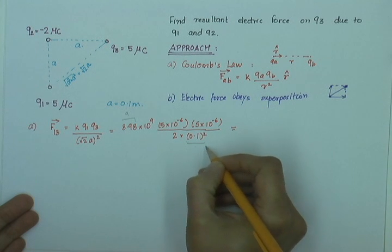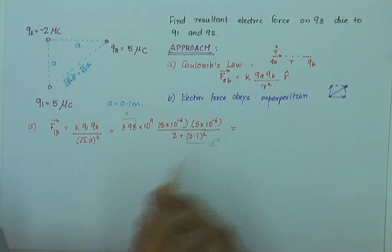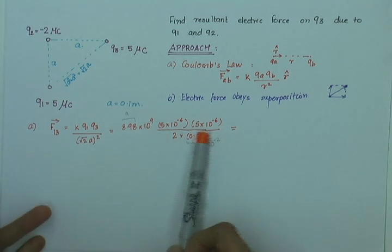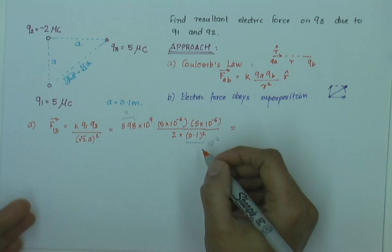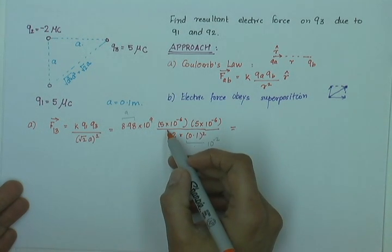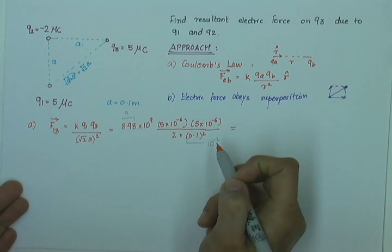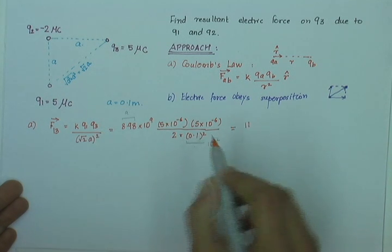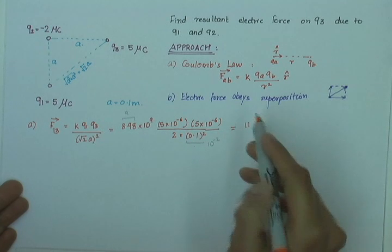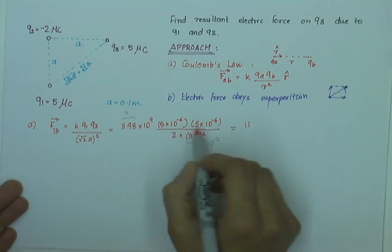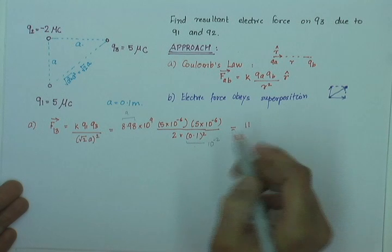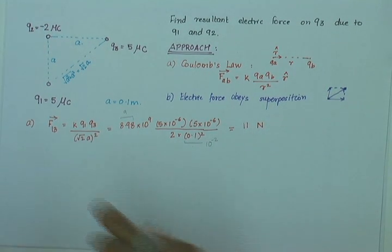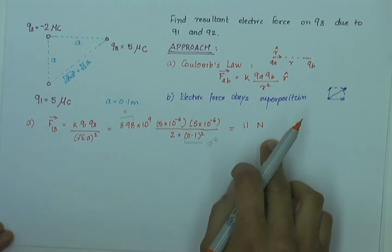Let us see what that will come down to. Let us approximate this a little. I think of this as 9. This is 2 into 10 raised to minus 2 and so that comes down to 25 times 9. That is around 225 divided by 2 and that comes down to 11. So, it comes down to 11 Newton. Here, we did not consider direction. We have just found out the magnitude.